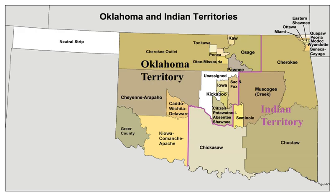After the Modoc War from 1872 to 1873, Modoc people were forced from their homelands in southern Oregon and northern California to settle at the Quapa Agency, Indian Territory. The federal government permitted some to return to Oregon in 1909. Those that remained in Oklahoma became the Modoc Tribe of Oklahoma. The Nez Perce, a Plateau tribe from Washington and Idaho, were sent to Indian Territory as prisoners of war in 1878, but after great losses, they returned to their northwestern homelands in 1885.